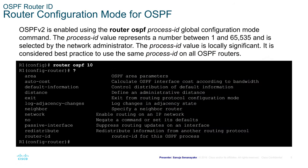OSPF Version 2 is enabled using the router OSPF command, followed by the process ID, in global configuration mode. On Cisco routers, you enter router OSPF and then give it a process ID — for example, router OSPF 10. The process ID value represents a number between 1 and 65,535 and is selected by the network administrator. The process ID value is locally significant. It is considered best practice to use the same process ID on all OSPF routers.